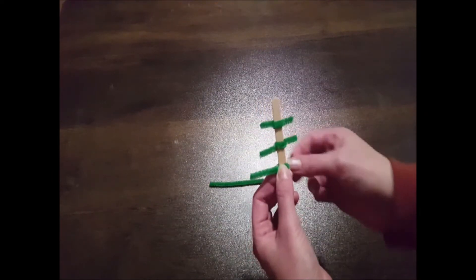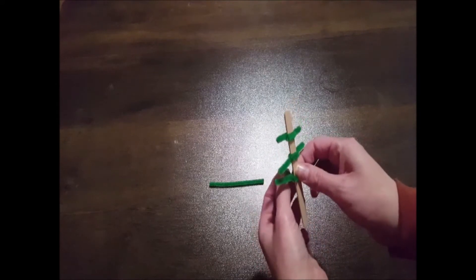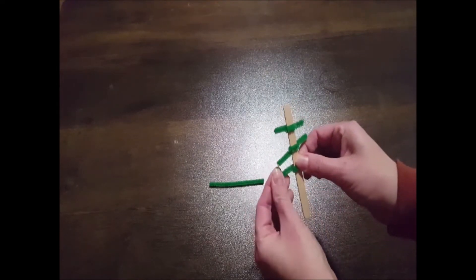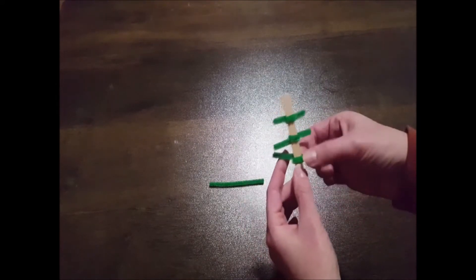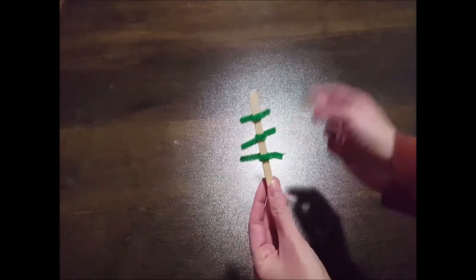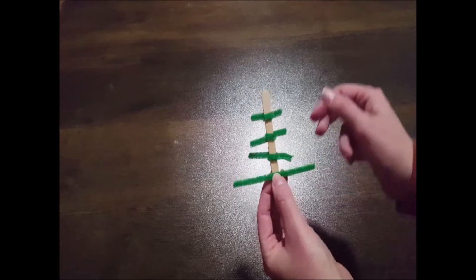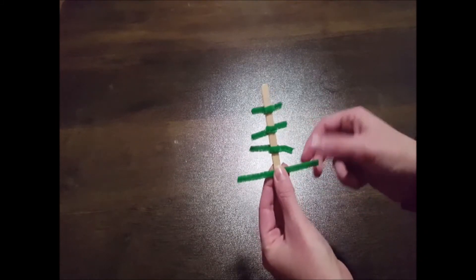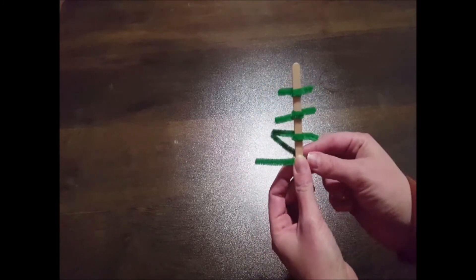Do the same with the other pieces of pipe cleaner, and keep the sizes appropriately lined up. You want the largest piece at the bottom. I like to keep the different pieces of pipe cleaner spaced evenly on the stick as well, between a quarter and half an inch apart from each other.